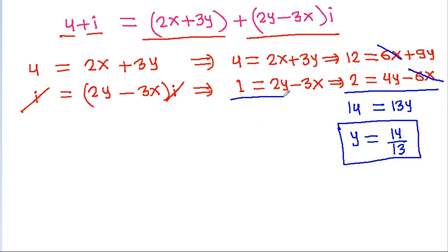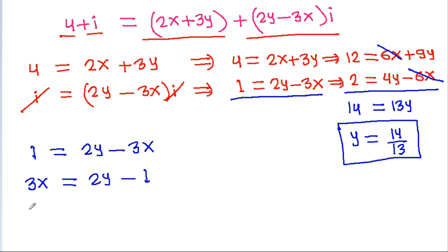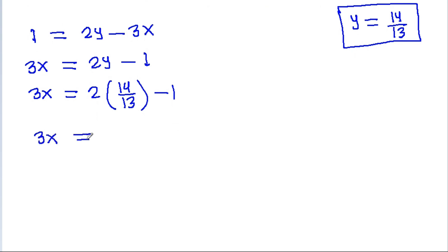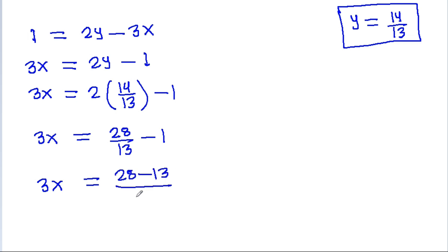From the equation 1 = 2y - 3x, we get 3x = 2y - 1. Substituting y = 14/13: 3x = 2(14/13) - 1 = 28/13 - 13/13 = 15/13. So x = 5/13.